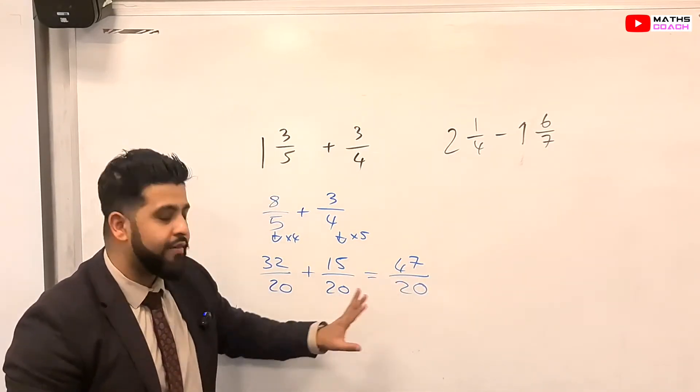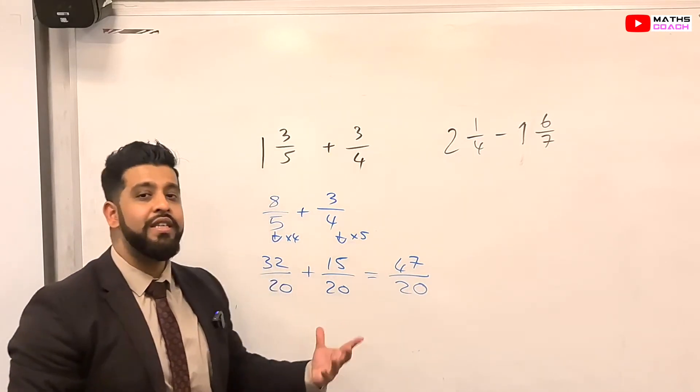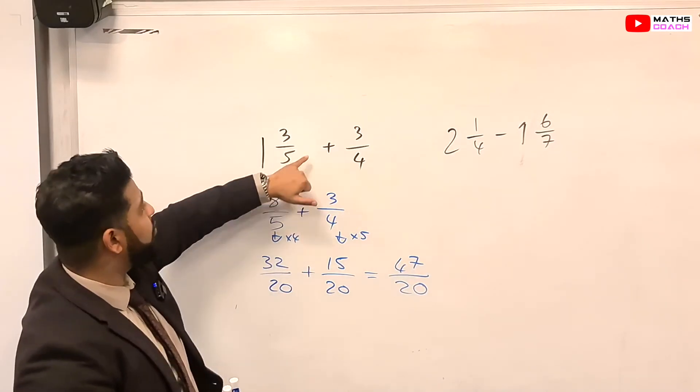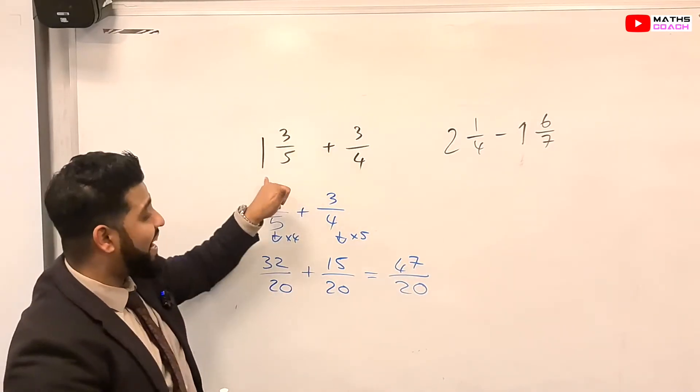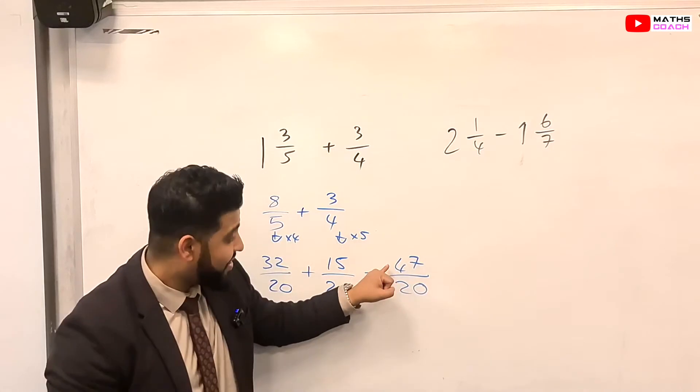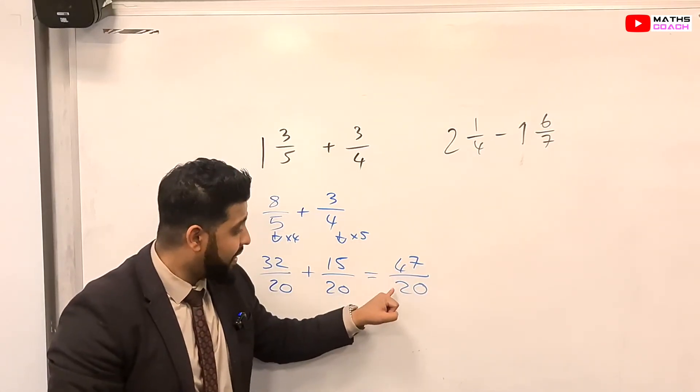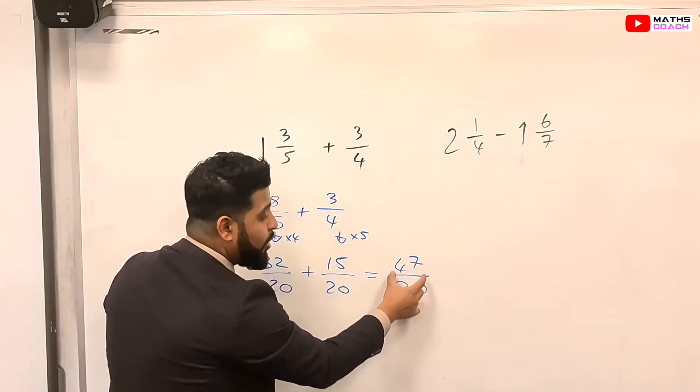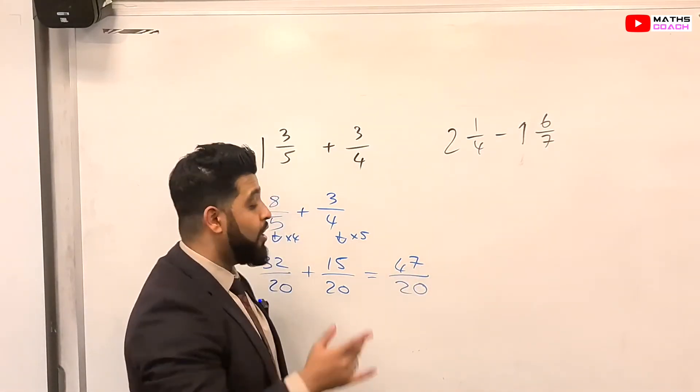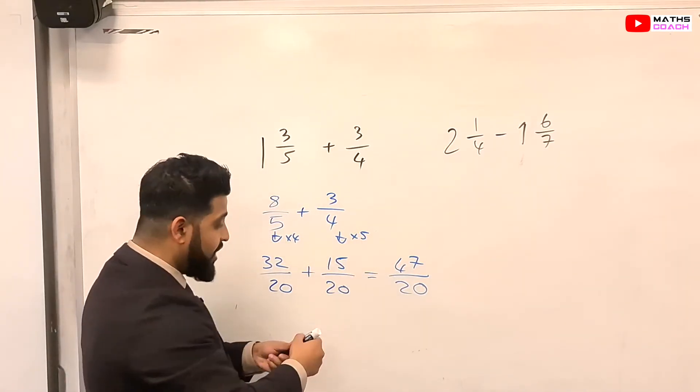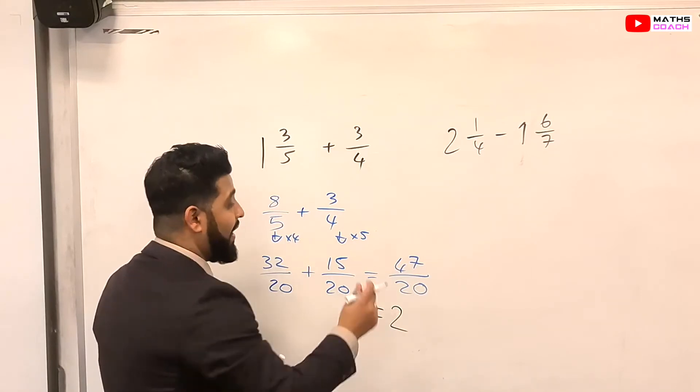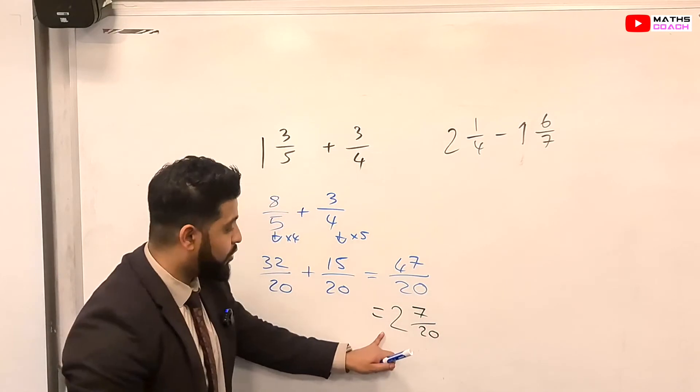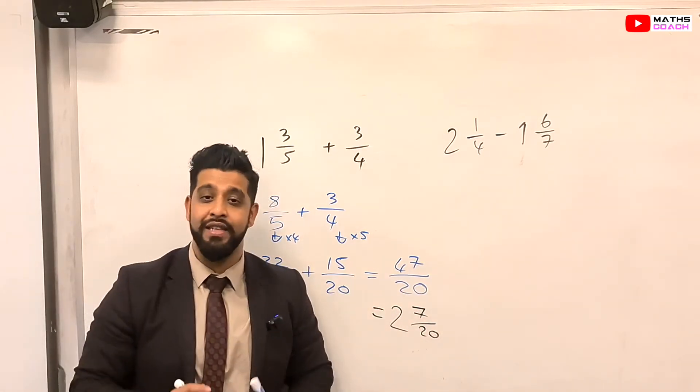Now, this final answer that you have, 47 over 20, you wouldn't want to leave it like that. Just in case the question is expecting you to also simplify. And often, a question will be given to you as a mixed number. And it will expect you to put your answer as a mixed number. Because this is a top-heavy fraction. The numerator is bigger than the denominator. So you will break this into a mixed number. So 20 goes into 47 how many times? 20 goes into 47. You've got 20. You've got 40. So it goes in 2 whole times. And the leftover from 40 to 47 is 7 twentieth. So 2 and 7 twentieth is your final answer.